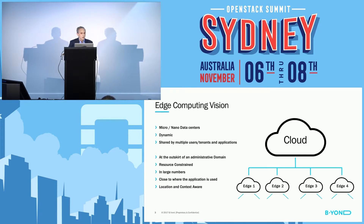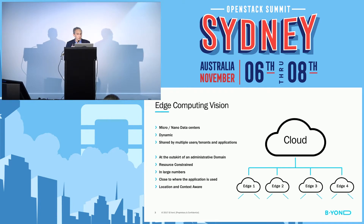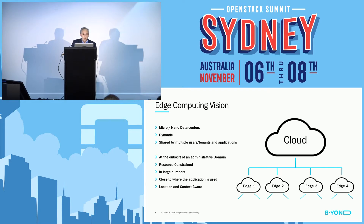We're talking about an environment that is decentralized, really at the outskirt of an administrative domain. We're talking about many nodes — many small nodes, micro and nano data centers — nodes that are resource constrained individually but large in number. There are also differences in terms of what information is available to these nodes, what awareness they have of their context and their location. In all cases, the edge node is about running the application close to where it's being consumed by the end user.